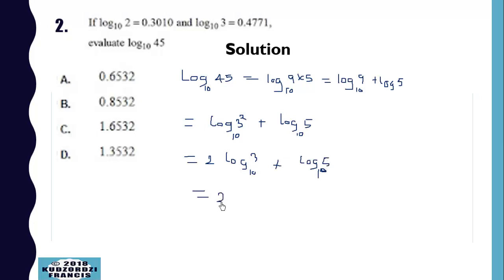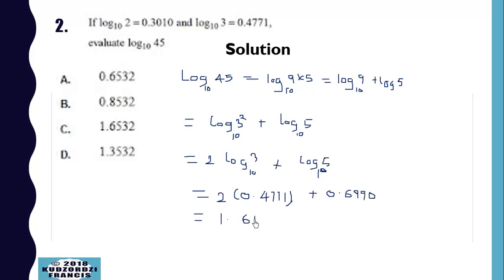All these are in base 10. So 2 log 3 plus log 5. By substitution we get 2 times 0.4771 plus log 5, which is 0.6990. We evaluate this to obtain 1.6532.